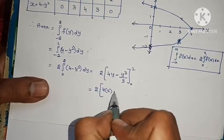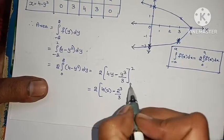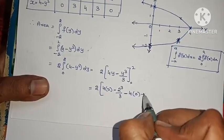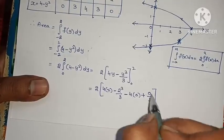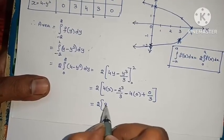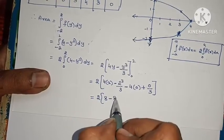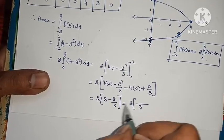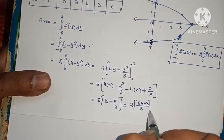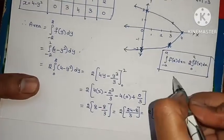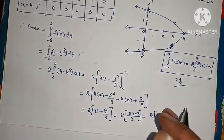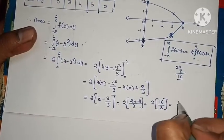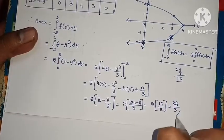Integrating: 2 × [4y − y³/3] from 0 to 2. Applying upper limit: 4(2) − 2³/3 = 8 − 8/3. Lower limit gives 0. So 2 × (8 − 8/3) = 2 × (24/3 − 8/3) = 2 × 16/3 = 32/3. So the area is 32/3 square units.